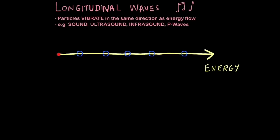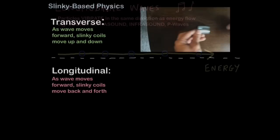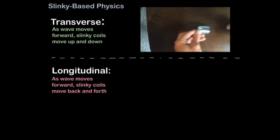As the energy travels forward, particles move back and forth. They're disturbed back and forth. We commonly use a slinky spring in a lab to demonstrate this. This will quickly show you how to model transverse and longitudinal waves using a slinky.